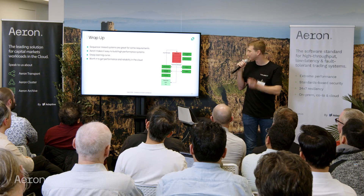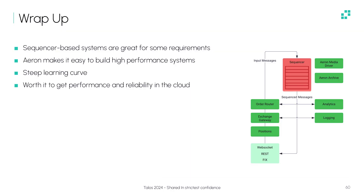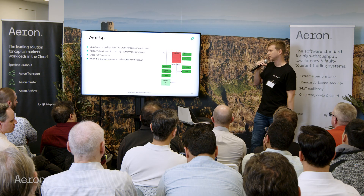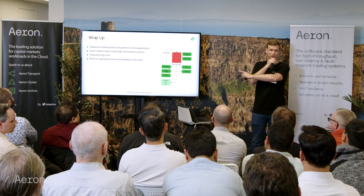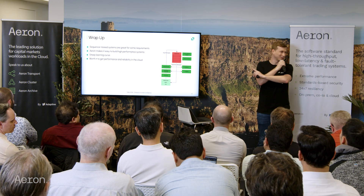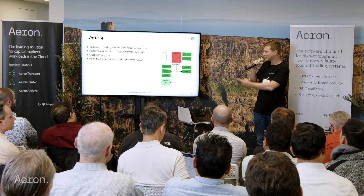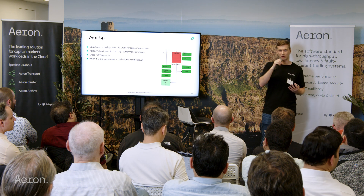Wrapping up: sequencer systems are great for these sets of requirements and they work really well for us. Aeron makes it easy to build high-performance systems like this. I think one of the Aeron values is about building libraries not frameworks — something Todd or Martin said — and the testament to how easy it is to compose the pieces they provide and build your own system with your own requirements is really a testament to the quality of these open source libraries. That said, there's a steep learning curve; this stuff is not easy to build or get right. But it's definitely worth it to get the kind of performance and reliability we want when building systems in the cloud.